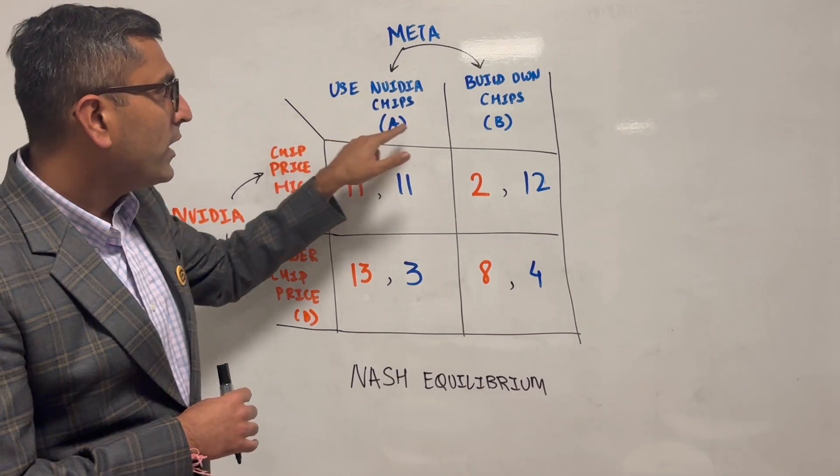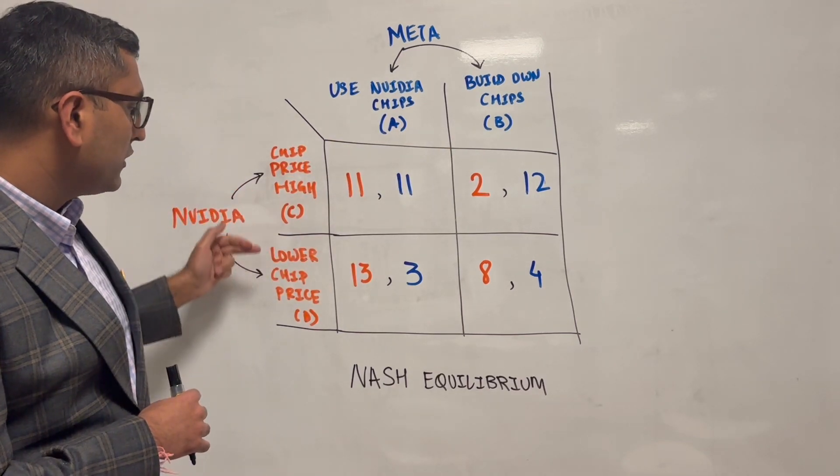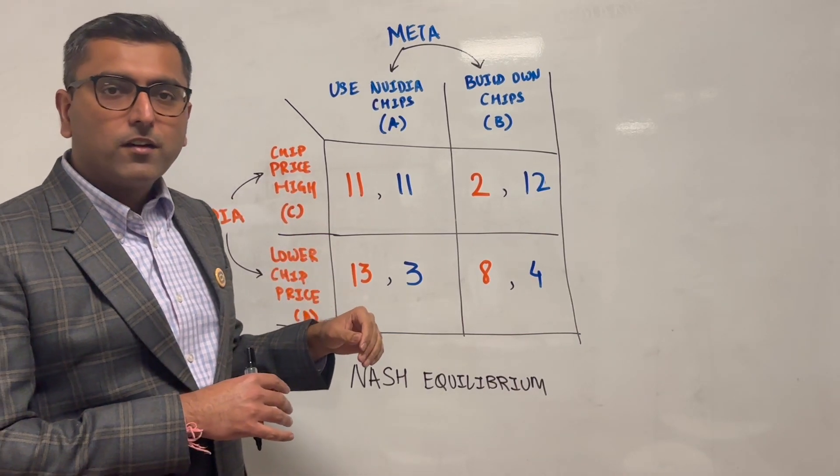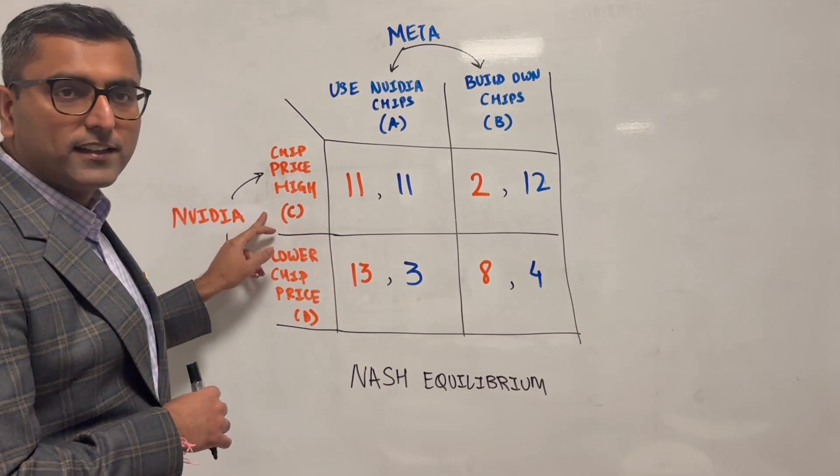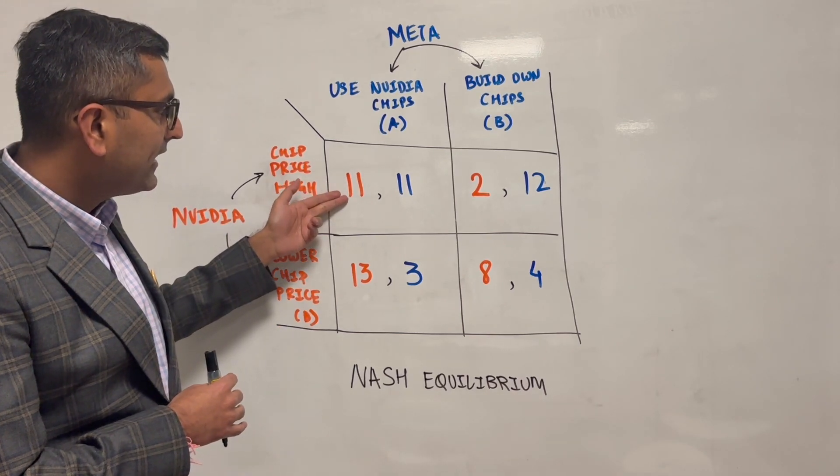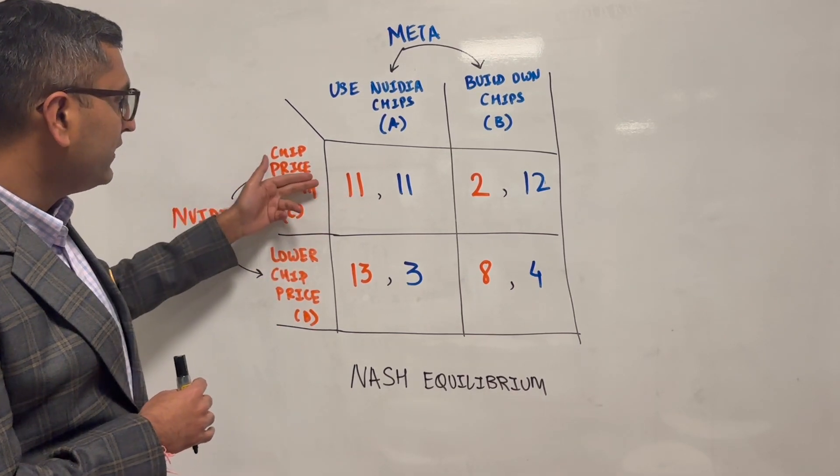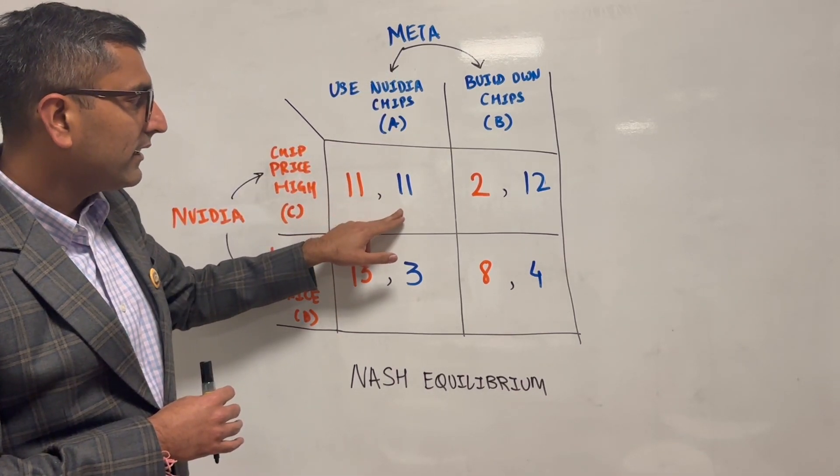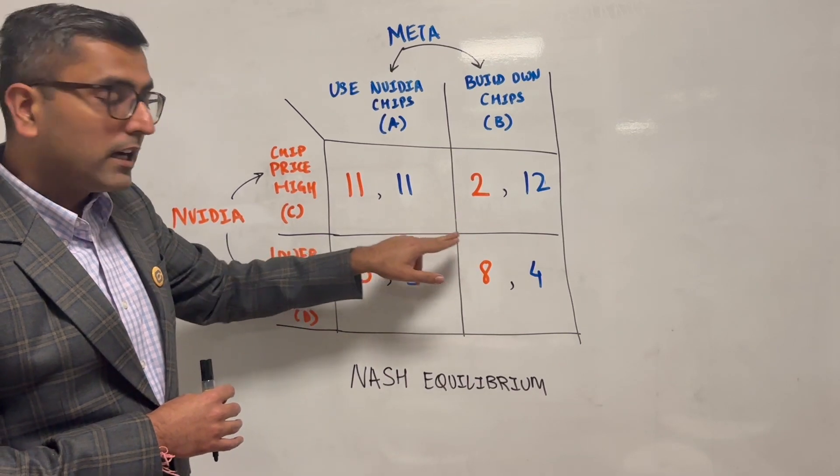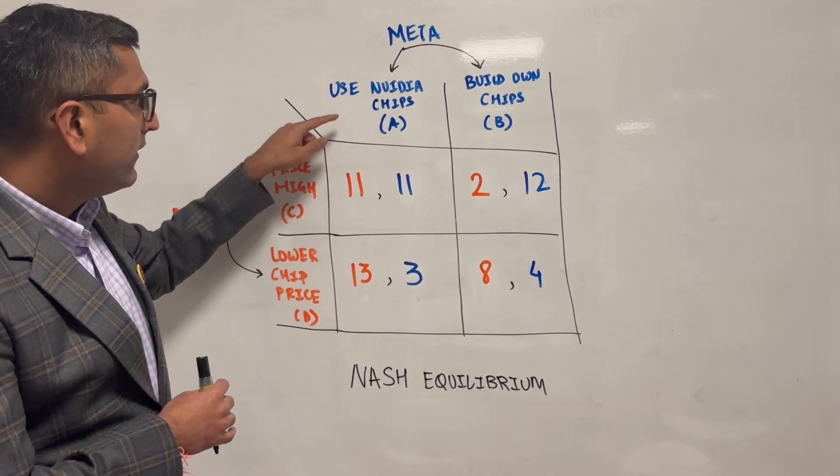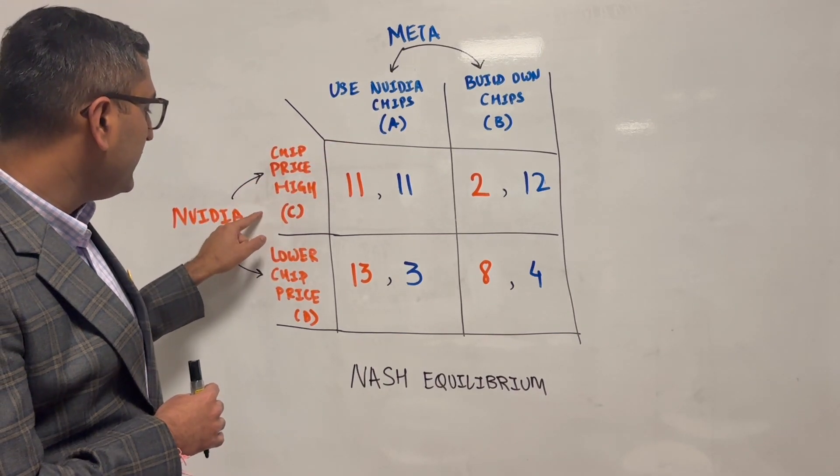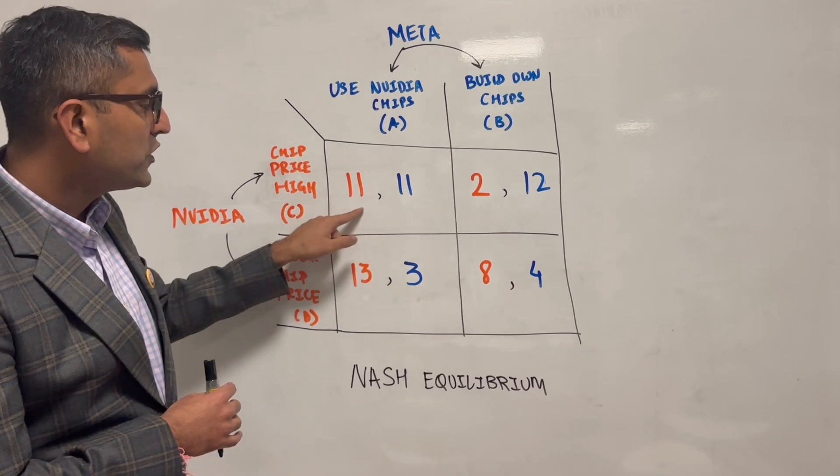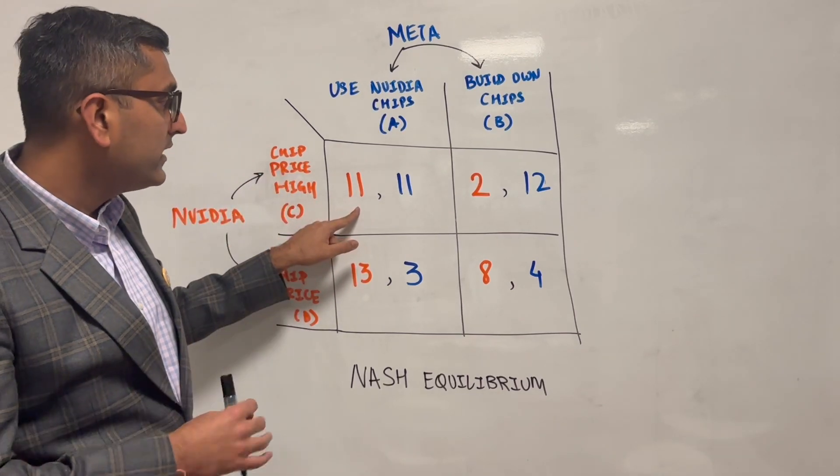Meta needs to choose whether to do A or B and Nvidia C or D. The payoff, meaning what does Nvidia think is the benefit that we get, is highlighted in orange color. Everything Nvidia is orange, everything Meta is blue. So this 2x2 cell covers the payoffs.